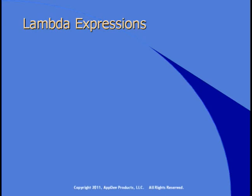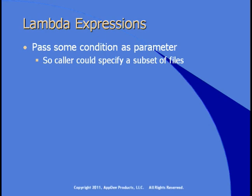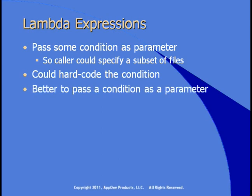Imagine you wanted to pass some condition as a parameter, so a caller could specify a subset of files. As it is now in our examples, we're getting all of the files in a folder in the output list. What if you wanted to say, I only want files where the size is greater than 10,000 bytes? You could hard-code that condition in the procedure, but every time you wanted a different condition, you'd create a different procedure. It might be better to pass that condition as a parameter — basically a where clause passed to your procedure.